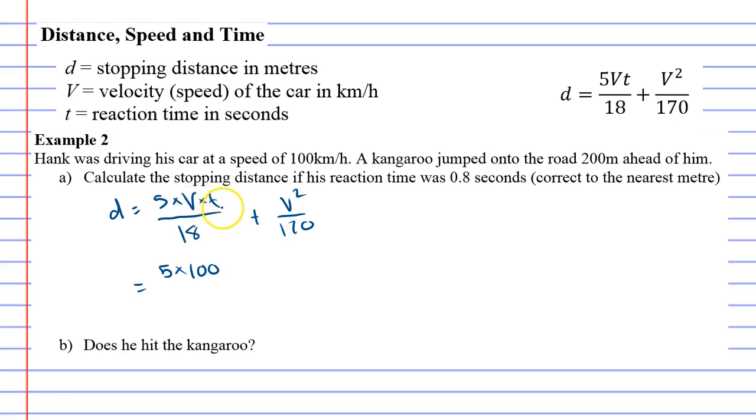Time t is your reaction time which was 0.8, all over 18, plus v is your velocity again so 100 squared over 170.